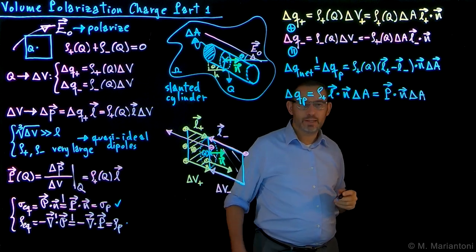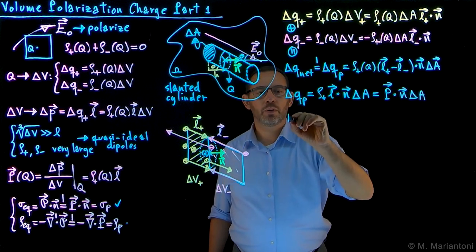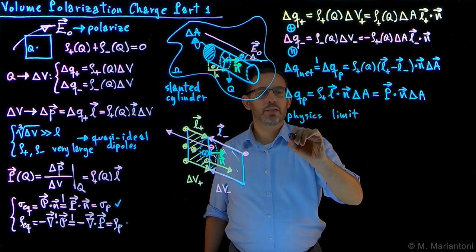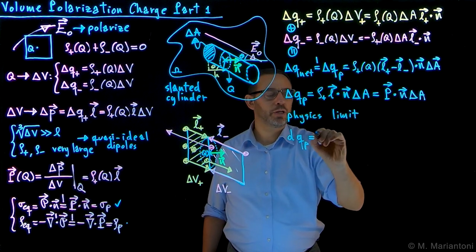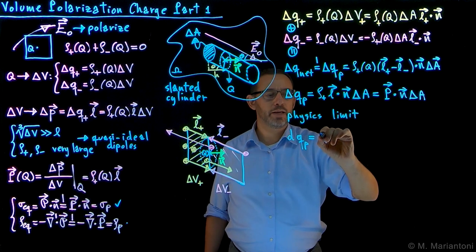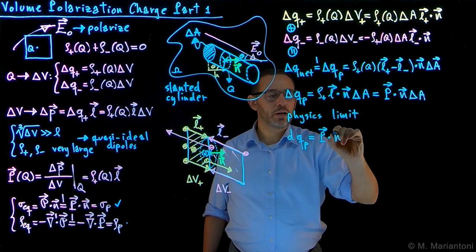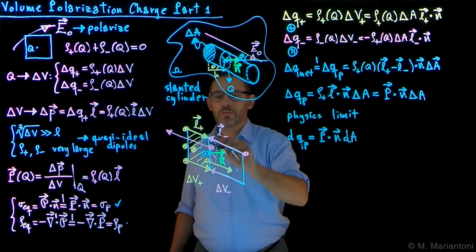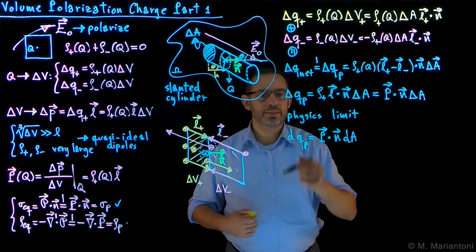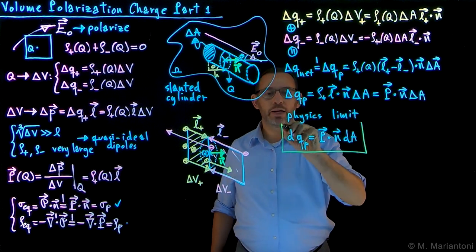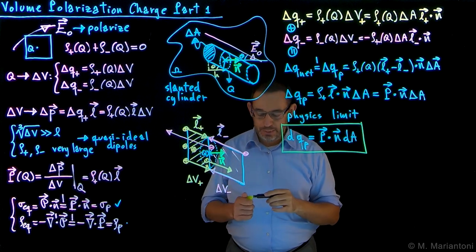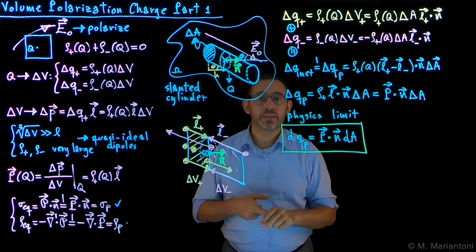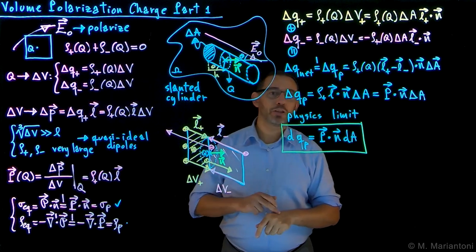So delta Q_P equals capital P dotted with N times delta A — it is the flux of the polarization vector P through the area delta A. In the physics limit, dQ_P equals P dot N dA. The flux of the polarization vector P through the area dA gives the total charge that went through this interface during the polarization process. This is the result we were looking for.